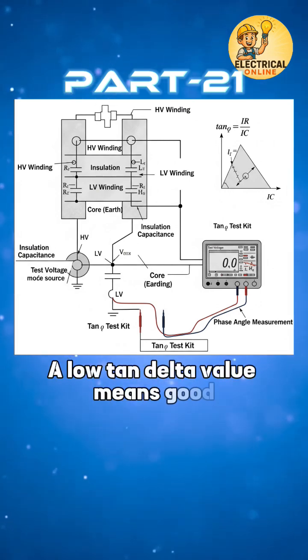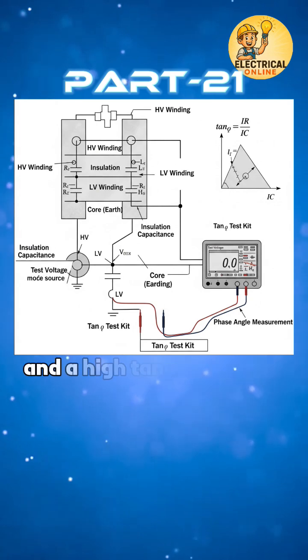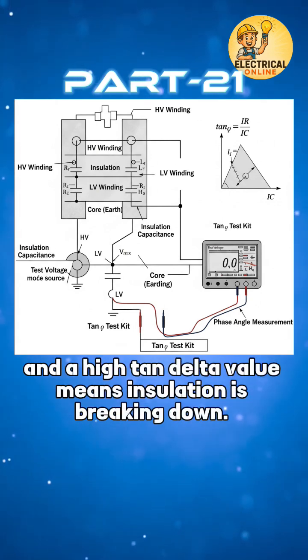A low tan delta value means good, healthy insulation and a high tan delta value means insulation is breaking down.